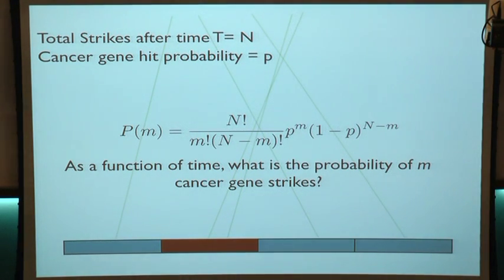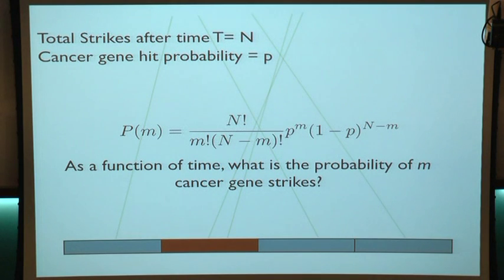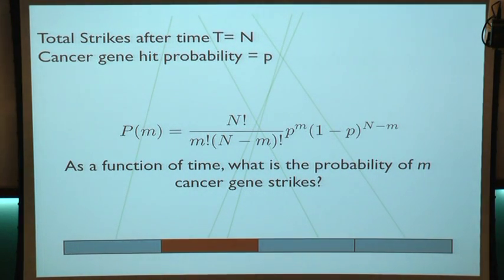Using this model, we can answer: what's the probability of getting cancer as a function of how old you are? More mathematically, as a function of time T, what's the probability that you have gotten M number of strikes to the cancer genes? Given that it's completely random and occurs at a constant rate, this probability of M strikes is given by the binomial distribution. This just says that if you have M strikes to a cancer gene occurring with probability P, all the other strikes occur to things that are not cancer genes, and the order doesn't matter — those are just the different combinations.